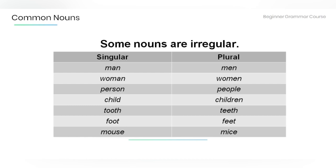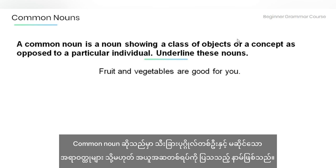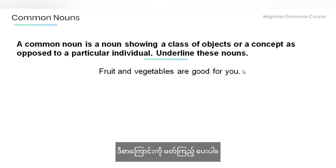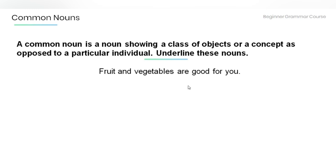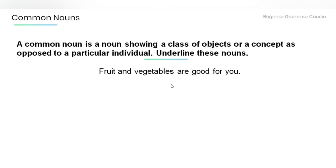Now let's practice a bit. A common noun is a noun showing a class of objects or a concept, as opposed to a particular individual. Read the sentence: 'Fruit and vegetables are good for you,' and underline the nouns. Fruit and vegetables are the nouns.